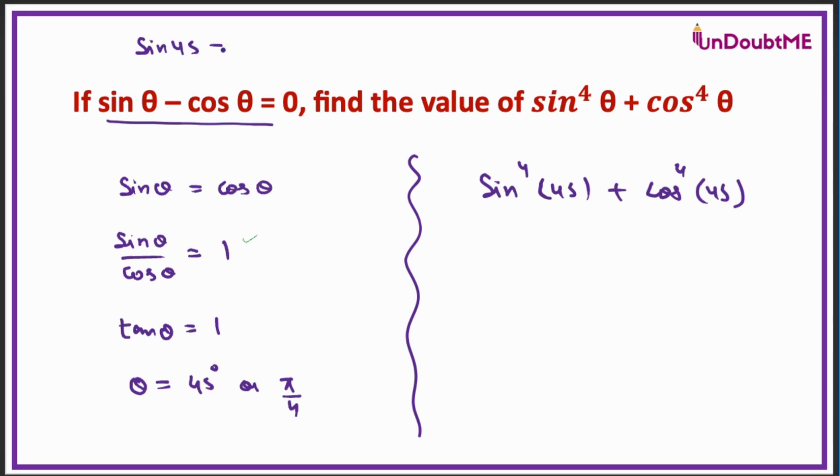The value of sin of 45 is equal to 1 over root 2. I have to just plug that value. 1 over root 2 to the power 4 and root 2 to the power 4 will be 1 over 2 square plus 1 over 2 square. That will be 1 over 4 plus 1 over 4 and that will be 1 by 2.